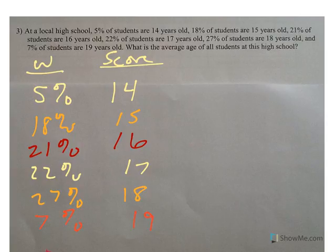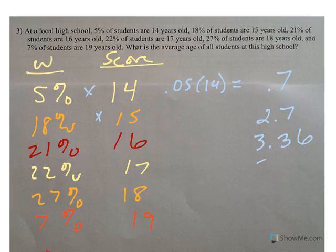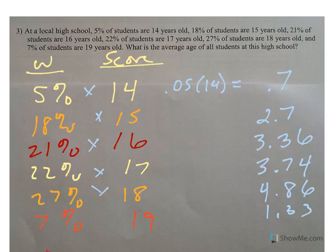Again, the percents should add up to 100, and they do. And so we're ready then to do our calculation. So when I multiply, right, .05 times 14. So my 14-year-old will yield .7 quality points. I multiply the .18 times 15 and get 2.7. 21% times 16 is 3.36. The 17 gives us 3.74. 4.86 and 1.33, multiplying the column.